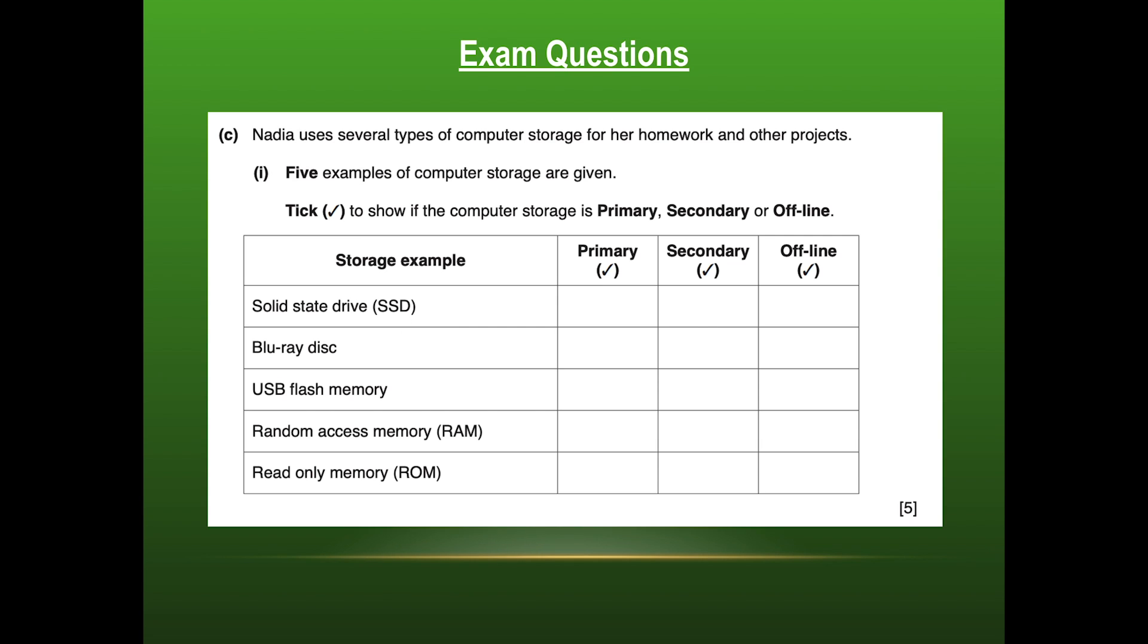So the first thing that we're going to see here is the solid state drive, the SSD. Now this question might cause some people problems because you may want to go with offline storage. However, it's missing one important word in order to be offline and that word's external. So the fact that it is just a solid state drive would mean that it must be internal to the computer. And if it's internal to the computer, then it will be a secondary memory.